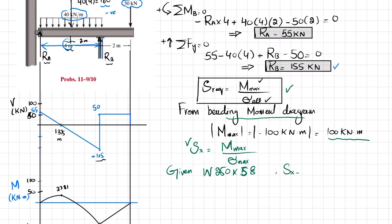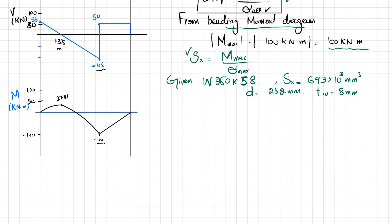So Sx equals 693×10³ cubic millimeters, the depth is 252 millimeters, and the thickness of the web is 8 millimeters.